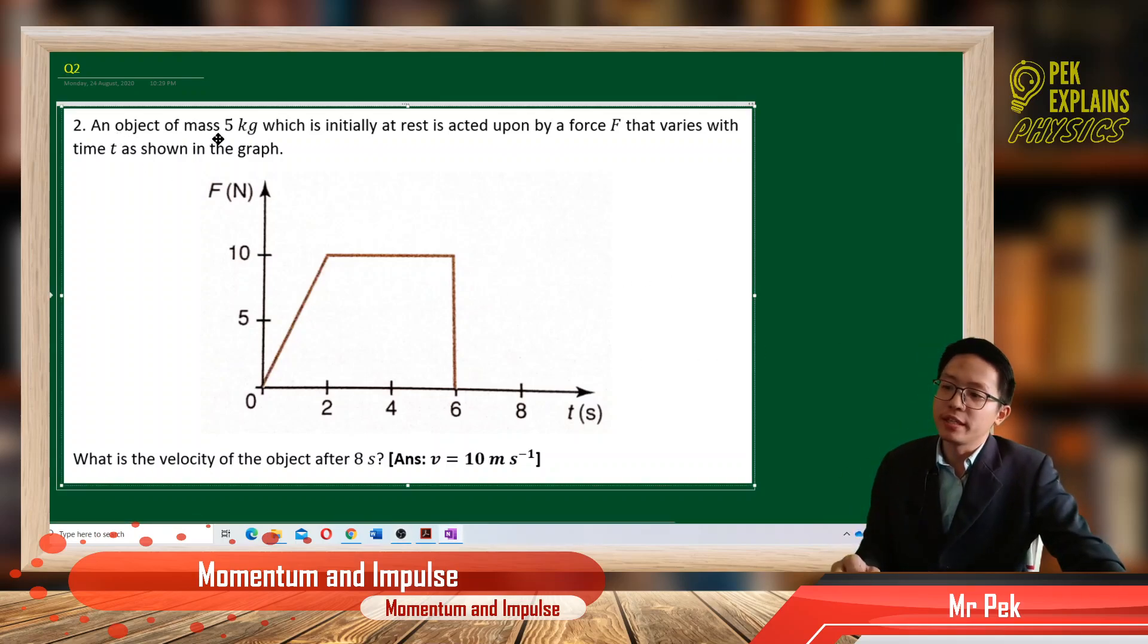An object of mass 5 kilograms which is initially at rest is acted upon by a force F that varies with time t as shown in the graph. This is a force-time graph. What is the velocity of the object after 8 seconds?